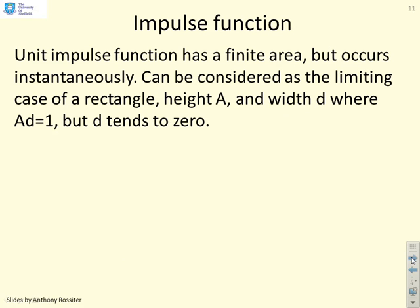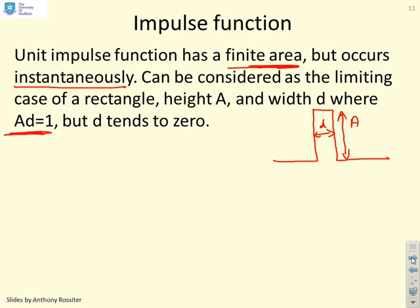Impulse function. So a unit impulse is something that has a finite area, or energy if you like, but occurs essentially instantaneously. And the way some people explain it is they say, think of it as the limiting case of a rectangle. And I can draw a rectangle for you here. So here's the rectangle. And you can see it's got height A and width D. But what we're going to do is we're going to assume that AD is 1, so the area of the rectangle is fixed, but we're going to let the width tend to 0. So you've got a finite area, but a vanishingly small width.